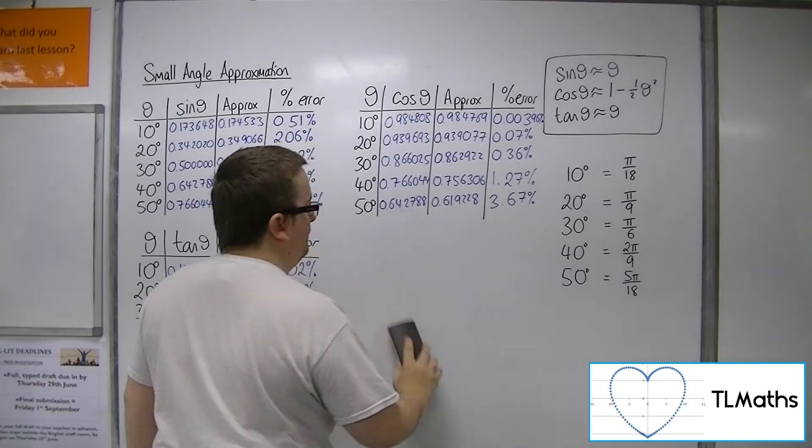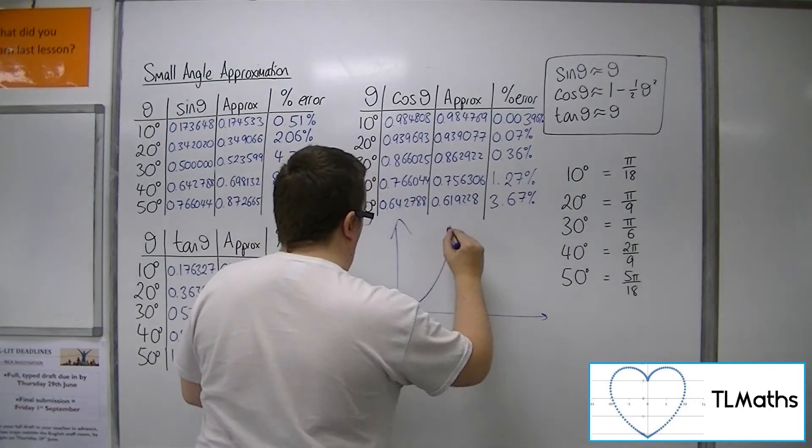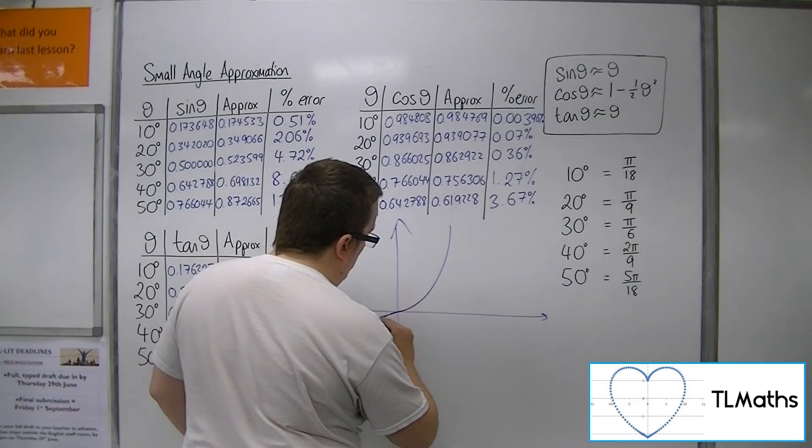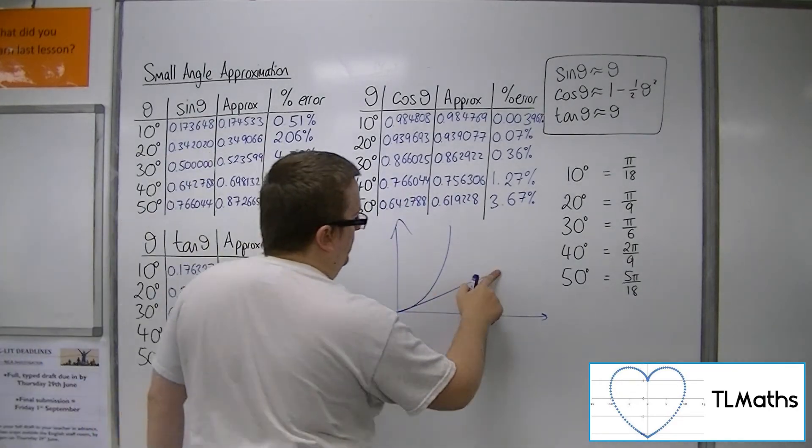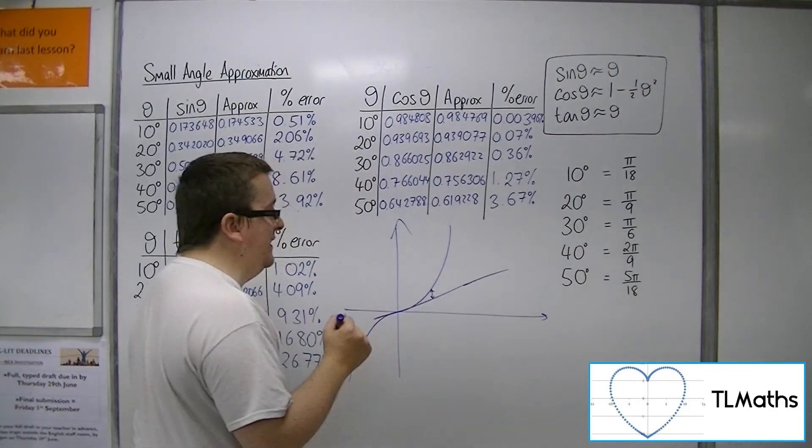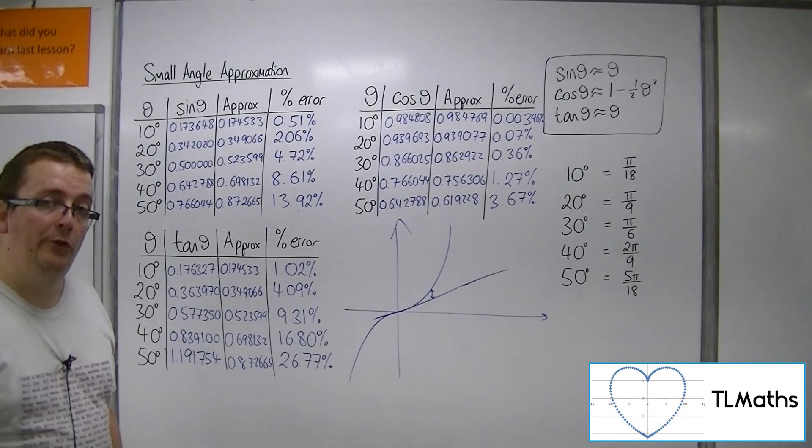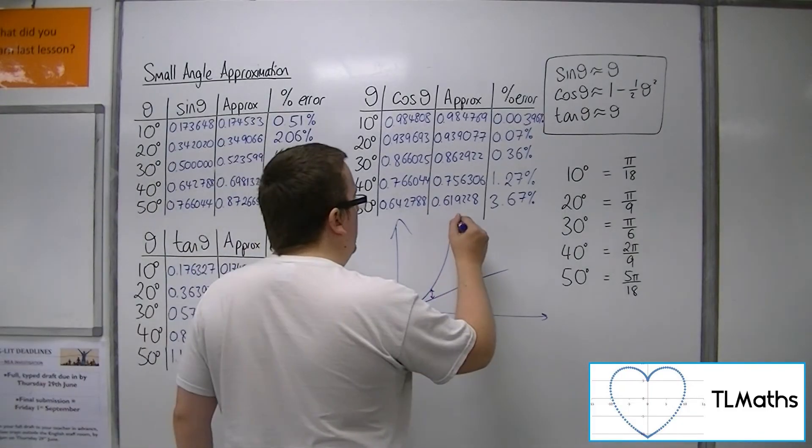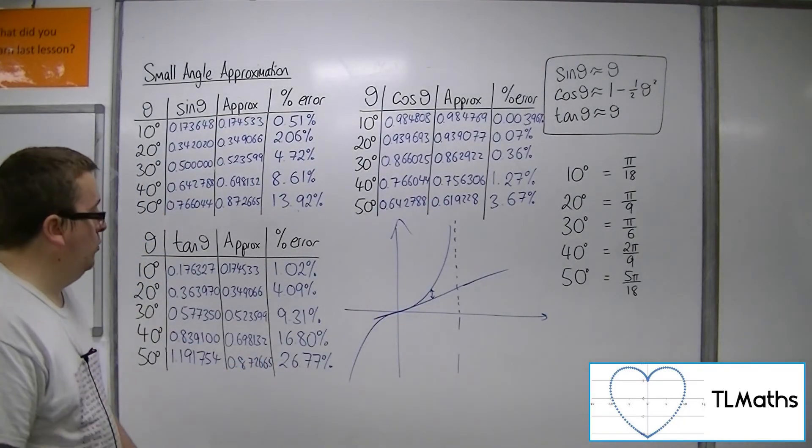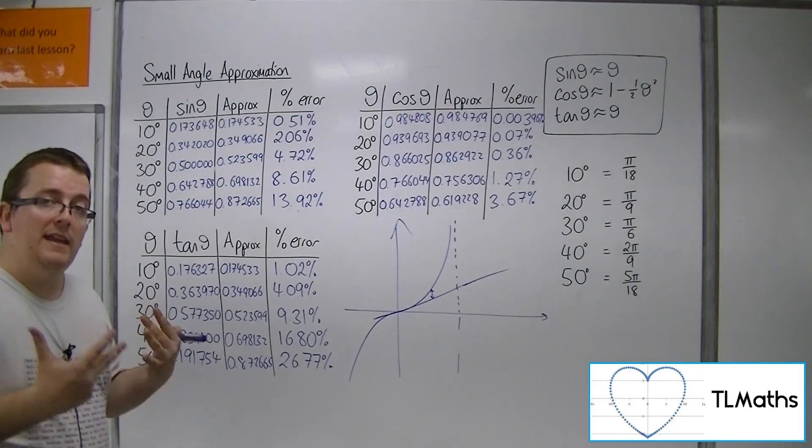Now, if you look at tan, the tan curve looks like this. If you think about what your theta line was going to look like, it's going to look like this. So, you're going to look like this, your y equals x line, so that at some point, this gap between the tan curve and your approximation isn't going to be very useful. In fact, by the time you get to 90 degrees, of course, you're going to hit that asymptote. And so, this percentage error, as you get towards 90 degrees, is going to increase very quickly indeed.